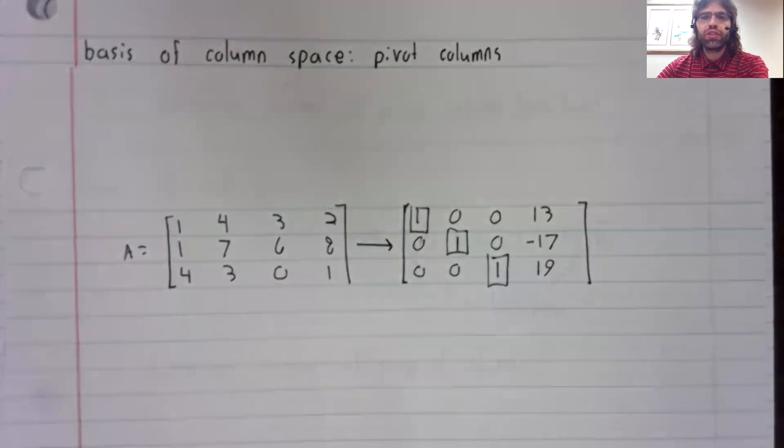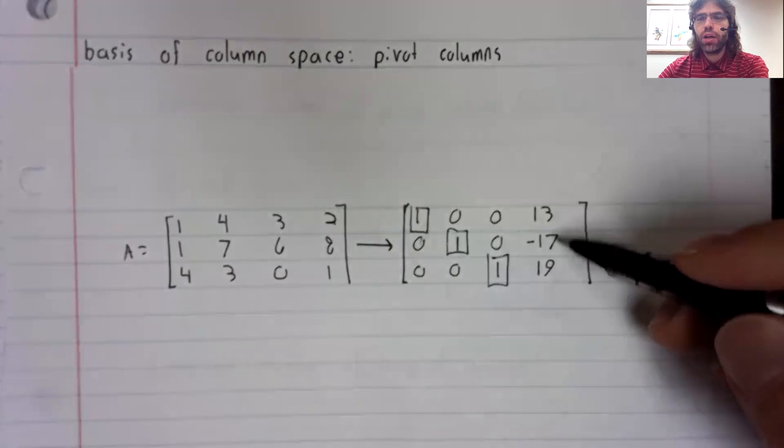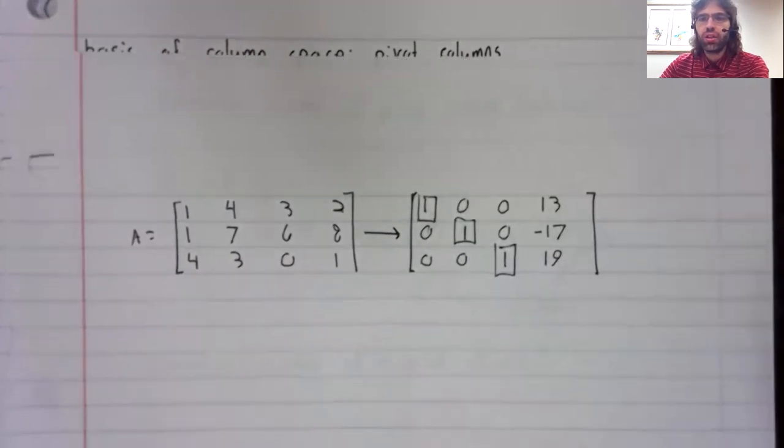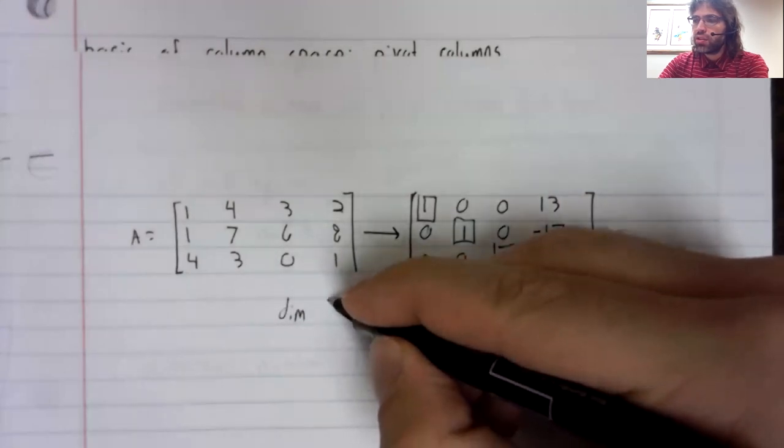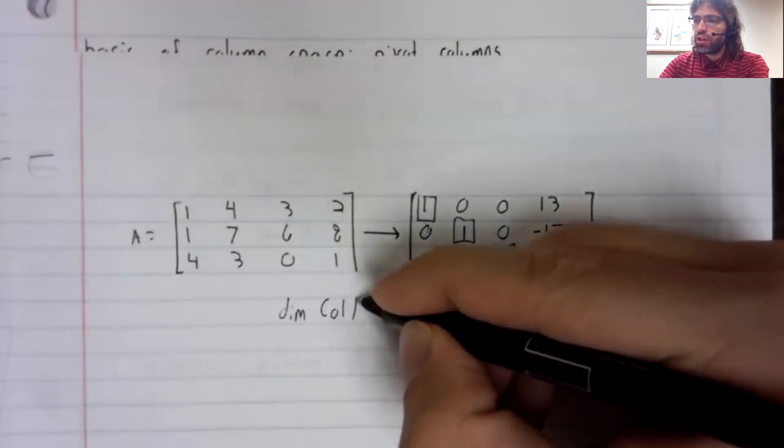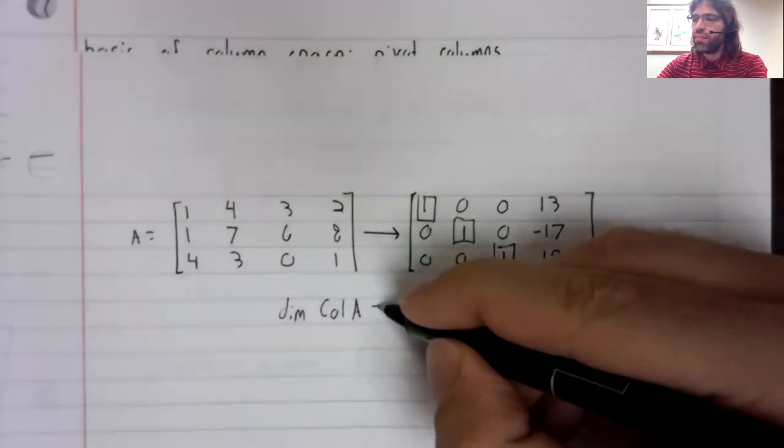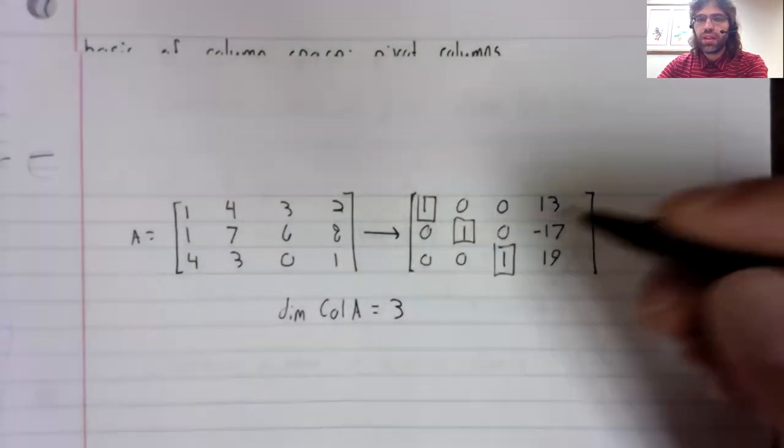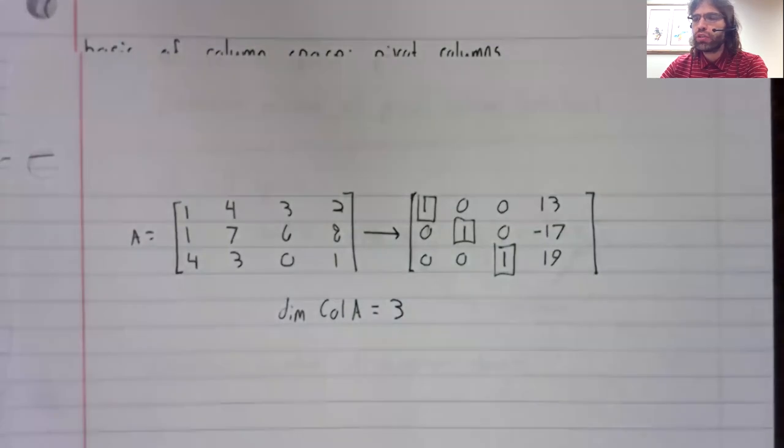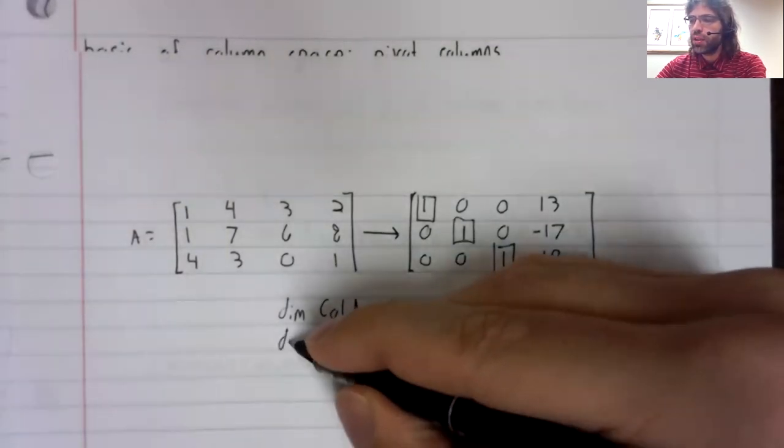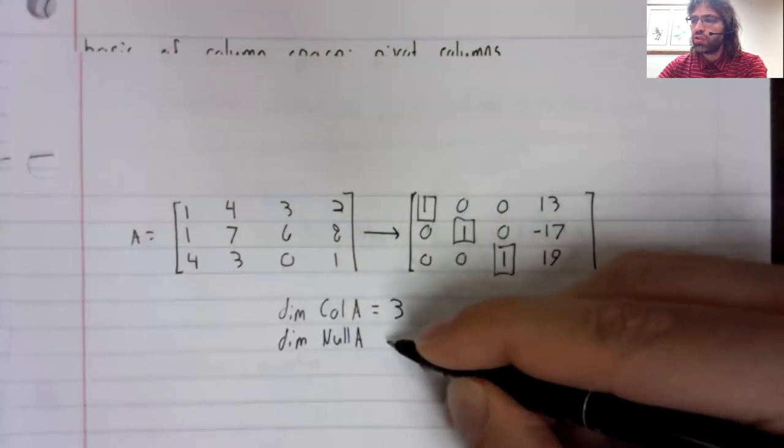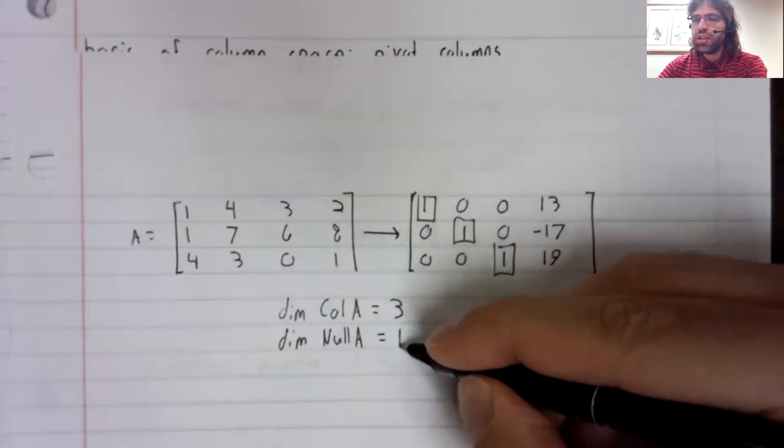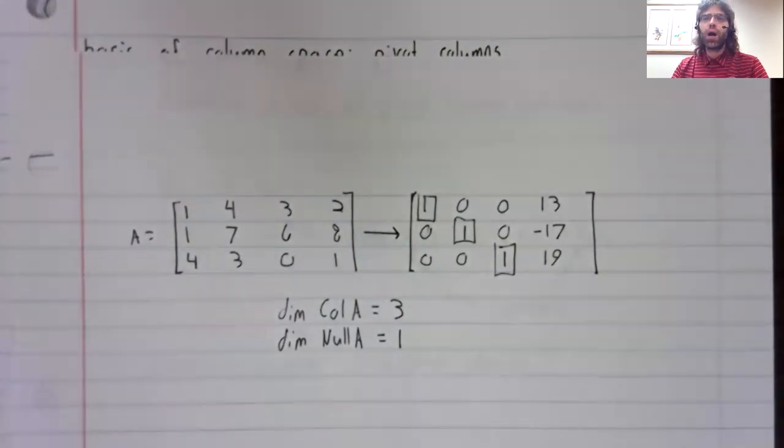So we have three pivot columns and one non-pivot column. The dimension of the column space of A is therefore three. The dimension of the null space of A is one.